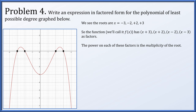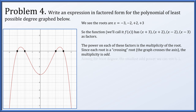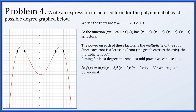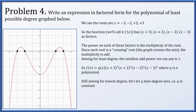The power on each factor is the multiplicity of the root. When multiplicity is odd, the graph crosses the axis at that point. We're aiming for least degree, so we use first power for all four factors. So f(x) = q(x) times (x plus 3)(x plus 2)(x minus 2)(x minus 3), where q(x) is an unknown polynomial. For smallest degree, q should be degree 0 — a constant — giving f(x) = a times (x plus 3)(x plus 2)(x minus 2)(x minus 3).